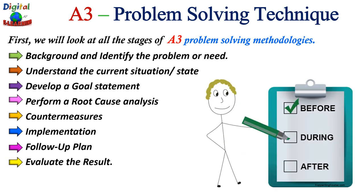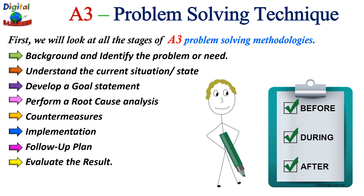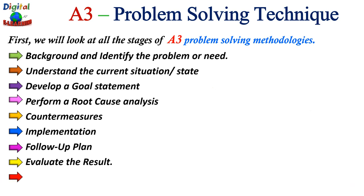Next, evaluate the results — measure them and make sure you hit your goal. Only through evaluation can you determine whether the final results have been achieved. When there are deviations, it is important to find out what is causing them, and then make adaptations in the process so the goal is still achieved. The last step is to standardize and improve: take actions to standardize the process changes, update all standard work, work instructions, and process control plans, and promote continuous improvement using the A3 tool within the organization.